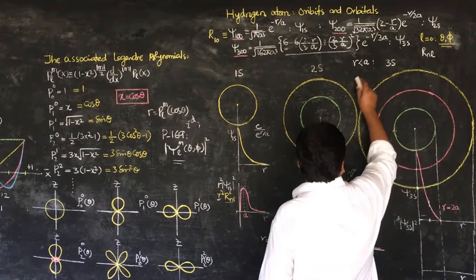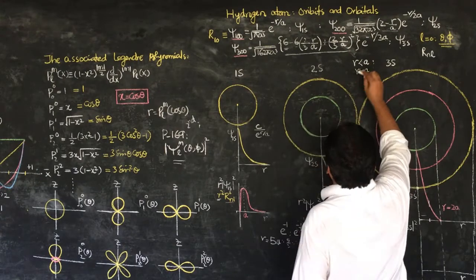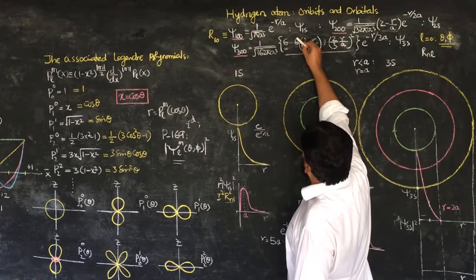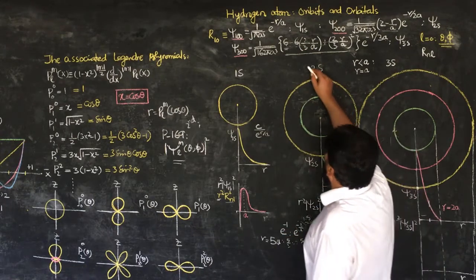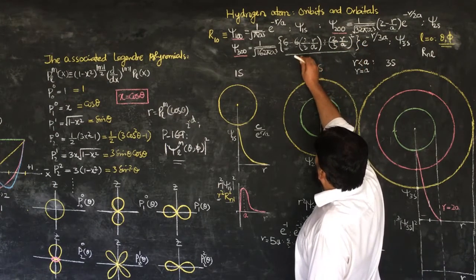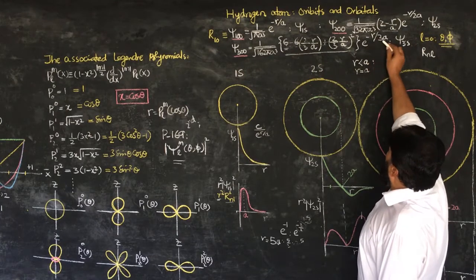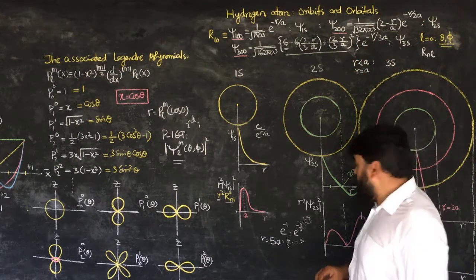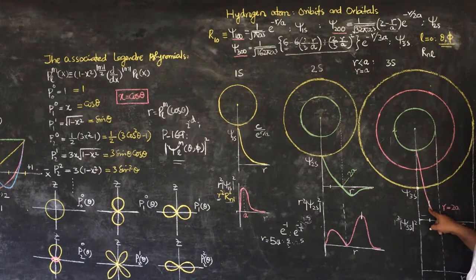Now when r becomes equal to a, what will happen? At r=a, the r/a terms cancel, we are left with 2/3 and 3 cancels, giving us 2. So 6 minus 4 gives 2, and the (2/3)² term gives a small addition — roughly 2-point-something. The overall value is still positive, and the exponential gives e^(−1/3), which is still a decaying but positive value at this point.